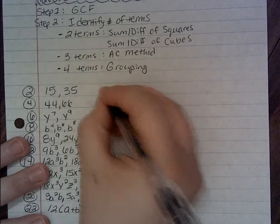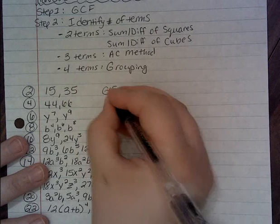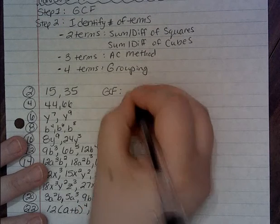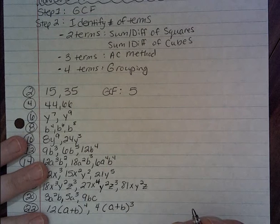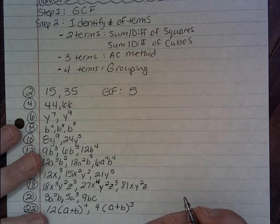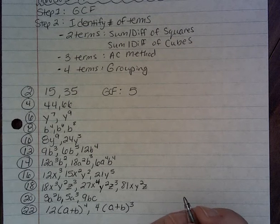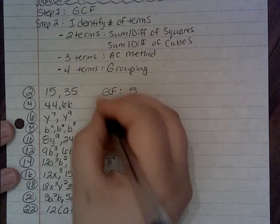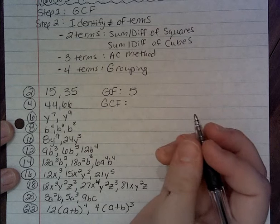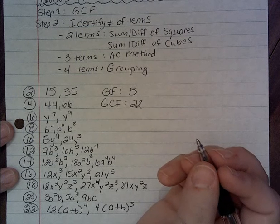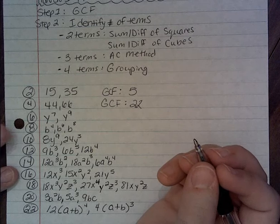We're looking for what each term has in common. The greatest common factor here — the number that 15 and 35 have in common — is 5. On number 4, the greatest common factor: you might automatically think 11, but there is a higher number. A higher number that will work is 22. Remember, we are looking for the greatest common factor, meaning the bigger number that goes into both of them.